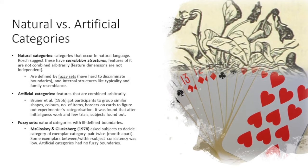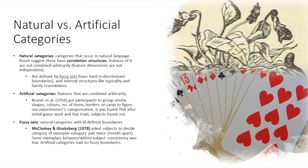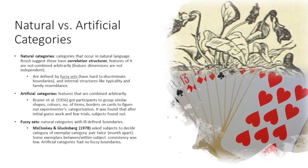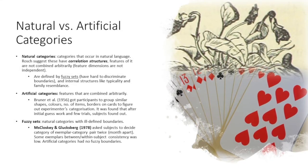Fuzzy sets are natural categories with ill-defined boundaries. McCloskey and Glucksberg 1978 asked subjects to decide categories of exemplar category pairs twice and this occurred one month apart.